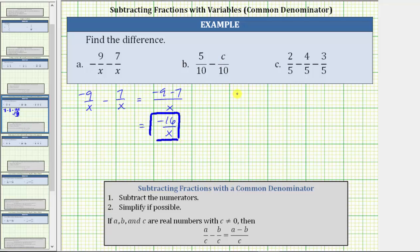For b, we have five-tenths minus c over 10. We have a common denominator, the denominator remains 10. And now we subtract the numerators, which gives us five minus c. We need to be careful here because it might be tempting to try to simplify the five and the 10, but we cannot do this because we cannot simplify across addition or subtraction. Therefore, this is the difference, and this fraction is in simplest form.